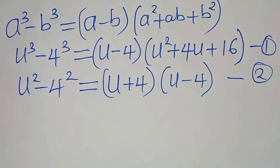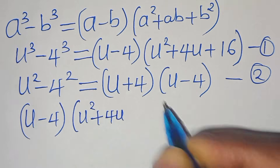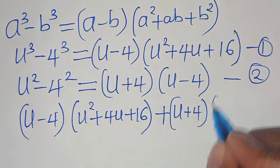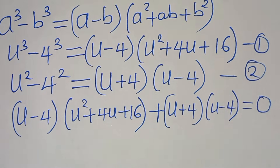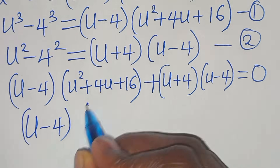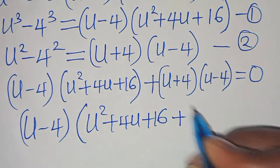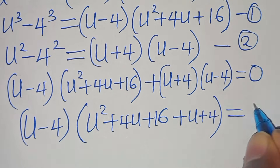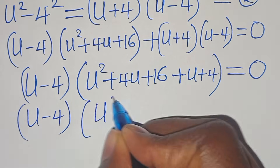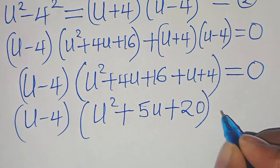Summing equations 1 and 2: we have u minus 4 times (u² plus 4u plus 16) plus (u plus 4)(u minus 4) equals 0. We see that u minus 4 is a common factor, so we factor it out. Inside the parentheses we collect u² plus 4u plus u, which is 5u, and 16 plus 4, which is 20.